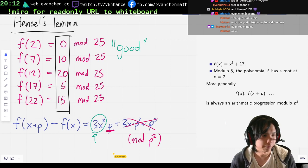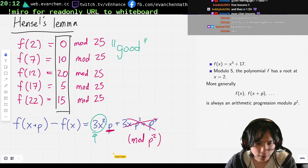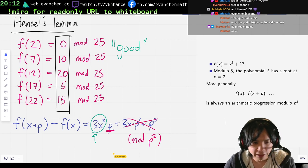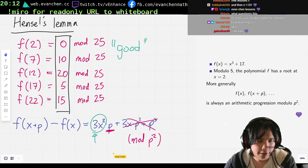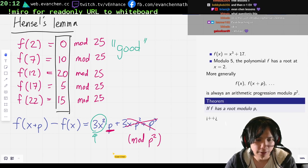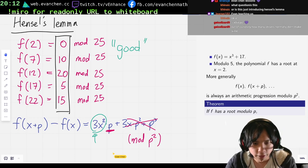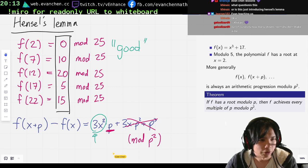And so now you might be like, oh, this is really great. This might mean that the theorem that we hope is true is that if f has a root modulo p, then because of the arithmetic progression, we might think that this means then f achieves every multiple of p modulo p squared. That would be like, in an ideal world, this might be true. Unfortunately, this is not true.